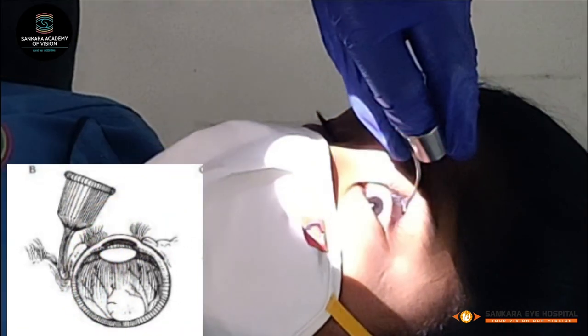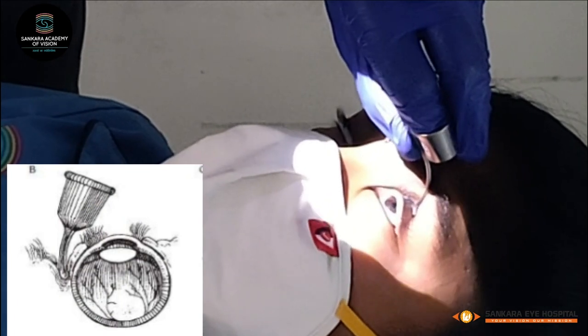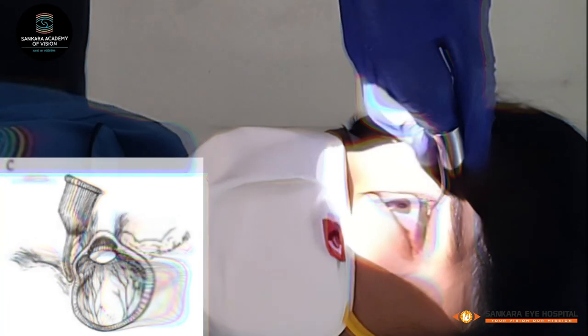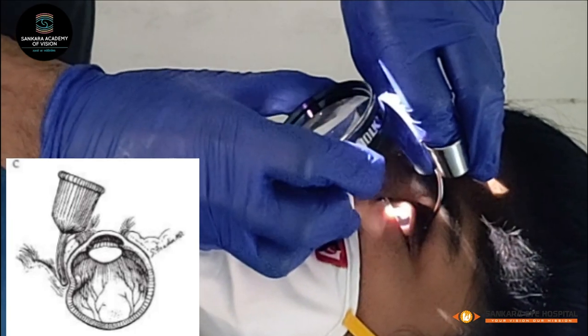Whilst holding it in place, ask the patient to switch their gaze back towards the indenter. Once in place, you need to apply very gentle pressure on the sclera to indent it sufficiently to view the anterior retina up to the ora serrata.